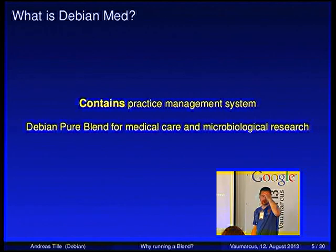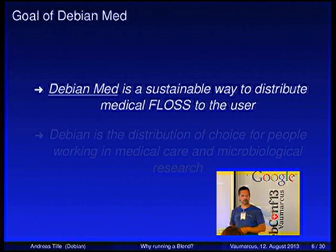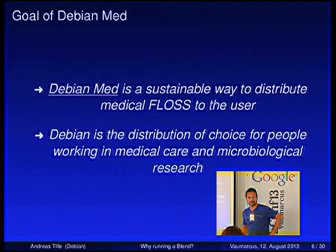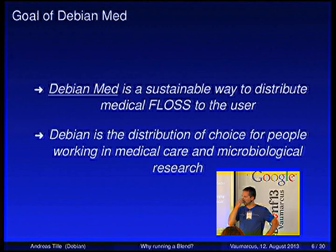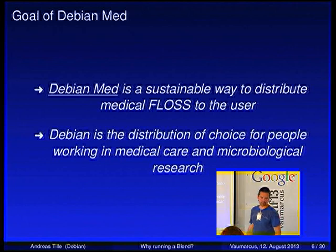There is a lot of medical imaging software in Debian, and an even larger amount of software for gene sequencing and preclinical research — that's actually the strongest part. So it is a whole system targeting different fields of medicine. Debian Med is a so-called pure blend for medical care and microbiology research. The goal is to provide a sustainable way to distribute medical free and open source software to users, and to make Debian the choice for people working in medical care and microbiology research.